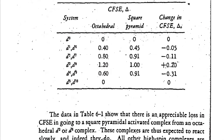Looking at this table, the CFSE of octahedral and square pyramidal intermediate are both zero for D0 and D5 systems, so there is no CFSE change. For D1 and D6 systems, the CFSE of the octahedral is less than that of the square pyramidal geometry, so these complexes are labile. For D2 and D7 systems, the CFSE of the intermediate is again greater, so these complexes are also labile. However, for D3 and D8 systems, the CFSE of the original octahedral complex is greater than the intermediate, so D3 and D8 complexes are inert.